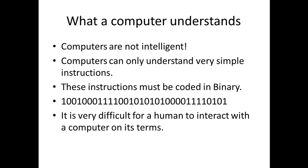For a computer to take any information in, act upon it, and send information out again, it must be in a binary form. I've given an example of a binary code: 1, 0, 0, 1, 0, 0, 0, 1, 1, 1. I just made up that code — it doesn't mean anything specific. But even if it did mean something specific to a computer, it's very difficult for a human to make sense of that just by looking at ones and zeros. It's not in a form that makes sense to a human.